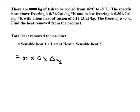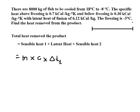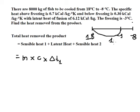We have sensible heat number one and number two because we have a below-freezing region. Above freezing, c is 0.7, and the freezing point is negative 3°C. If we draw the diagram: from 18°C down to negative 3°C, that's sensible heat number one; from negative 3°C to negative 8°C, that's sensible heat number two.